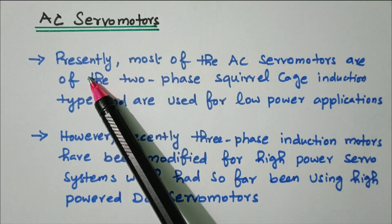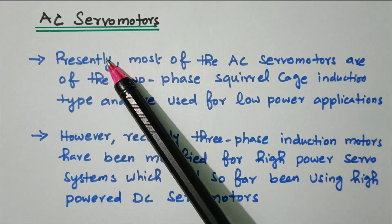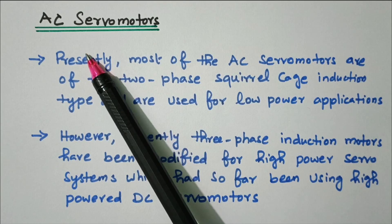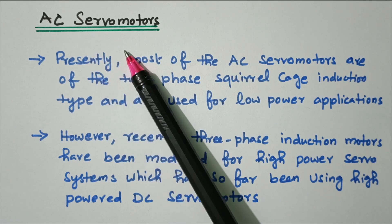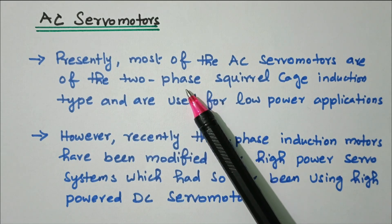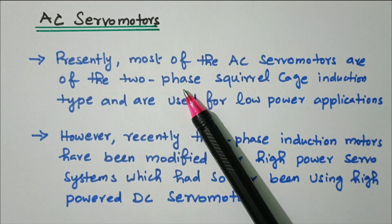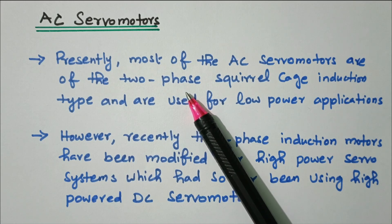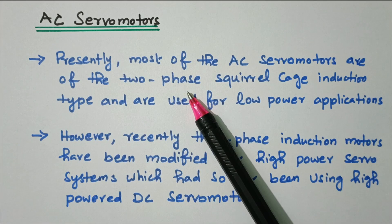Welcome viewers. In this video we'll see the details about AC servo motor. Now we'll go to the topic. AC servo motor — we know that servo motor is a position control motor, not a continuously rotating motor. It is mainly used for position control, used in radar tracking systems, guidance systems, process controllers, computer machine tools — wherever we need to control position, we use servo motors, not for continuous rotation.